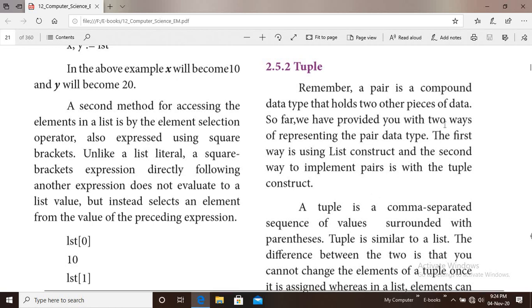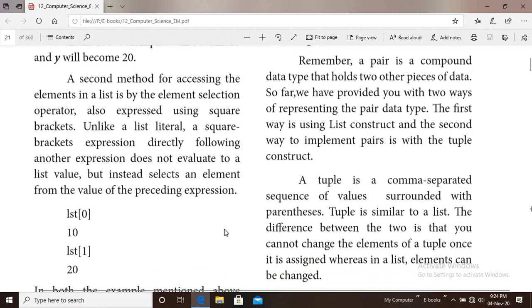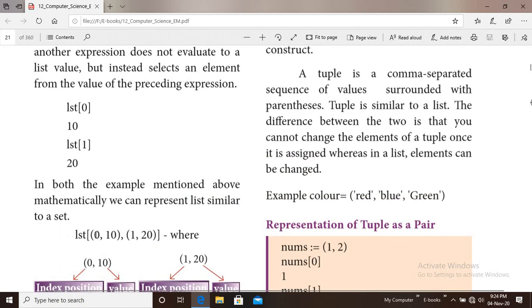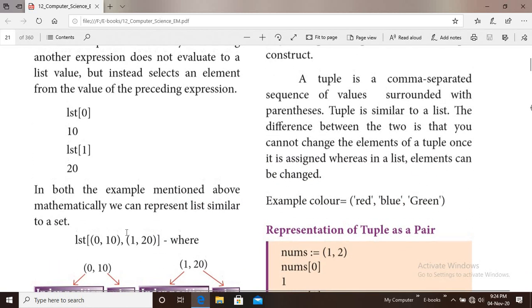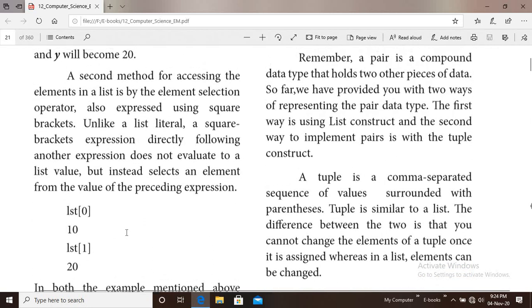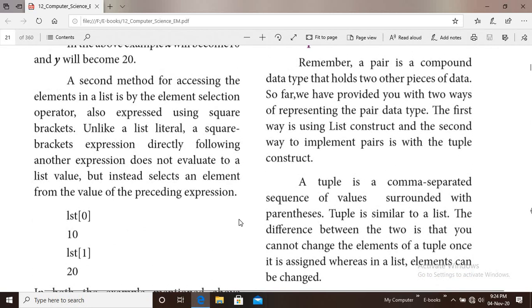Next one we are going to see is tuple. Remember, a pair is a compound data type that holds two pieces of data. So far, we have provided you with two ways of representing the pair data type: one is list and the other is tuple. The first way is using list and the second way is using tuple.